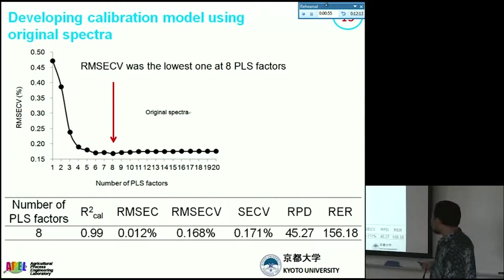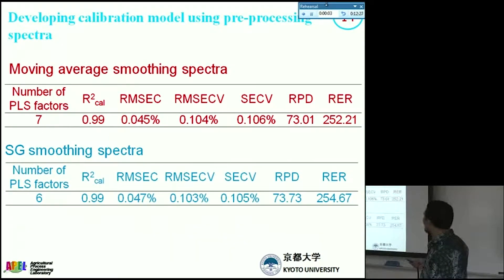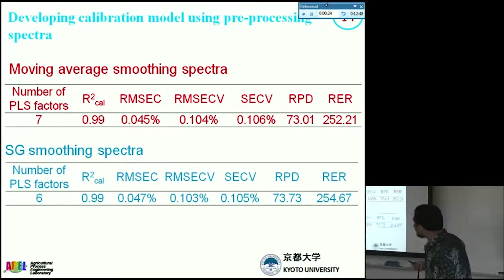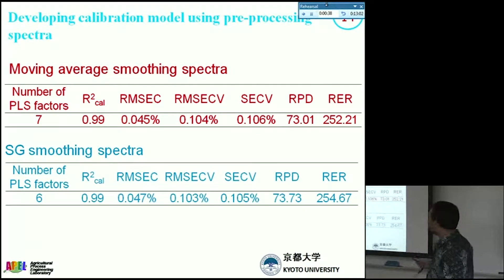On the same basis, we obtain the best model for moving average smoothing and Savitzky-Golay smoothing. For moving average smoothing, we only need 7 PLS factors — fewer than the original — and the RPD and R² values increase, meaning our model is better than the original. Using Savitzky-Golay smoothing, we can further reduce the number of PLS factors to 6, making the model simpler, with higher RPD and R² values, better than both the original and moving average.